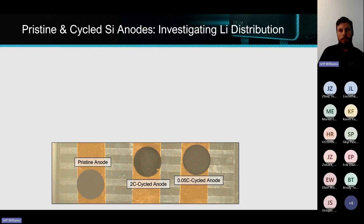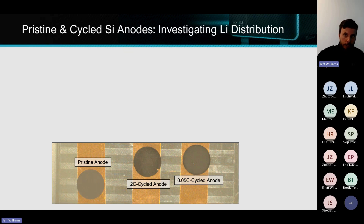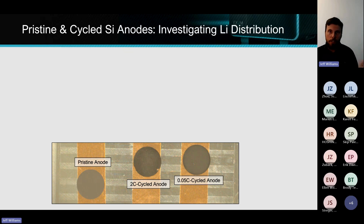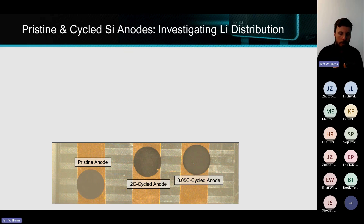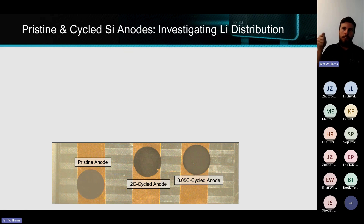We have a 2C cycle anode. If you're not familiar, 1C would be a normal charge rate, so 2C would be very accelerated charging — which is obviously what we want. We want our cell phones and cars to charge faster. And 0.05C would be a very slow charge rate. The hypothesis being: if I change the charge rate, do I change what's happening in the chemistry, which ultimately leads to shorter lifespans or failure mechanisms?